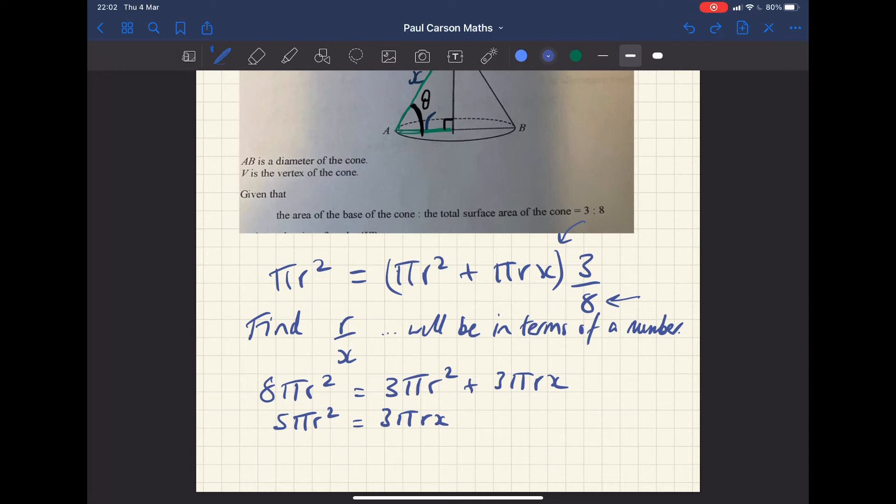So we've got 5πr² equals 3πrx. So we're getting closer. We just want r and x. So if I now pull it across even further, I'm running out of room here at the bottom. So I'm going to just go to the right of it here and remove everything from the right hand side. So we've got 5πr² - 3πrx equals zero. And then do what we often do in this situation, which is factorise it. So what's common is π and r. So I'll just take that outside of the brackets.